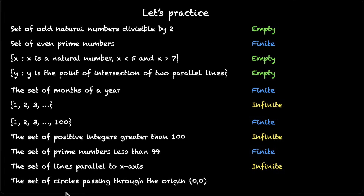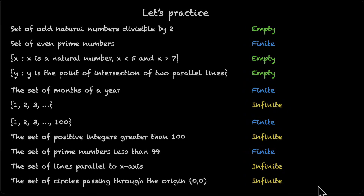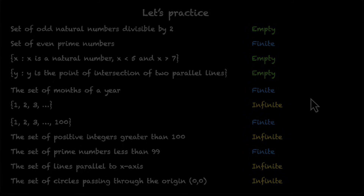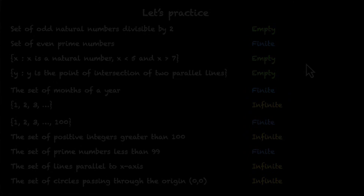And the last one: the set of circles passing through the origin (0, 0). There could be infinite circles passing through the origin in all directions, which means this is also an example of infinite sets. With this we're done — we now have a good understanding of how we classify sets as finite, infinite, and empty.